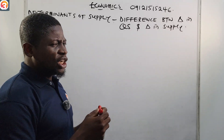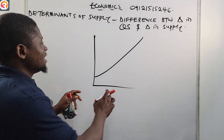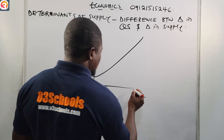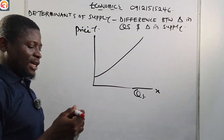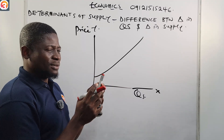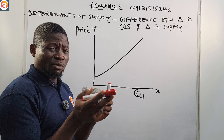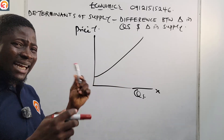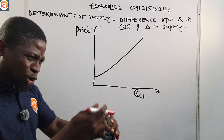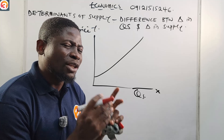Let's talk about change in supply first. If you have your supply curve drawn here — price on the y-axis and quantity supplied on the x-axis — this is the entire supply curve. For change in supply, we are talking about a shift in the entire supply curve.